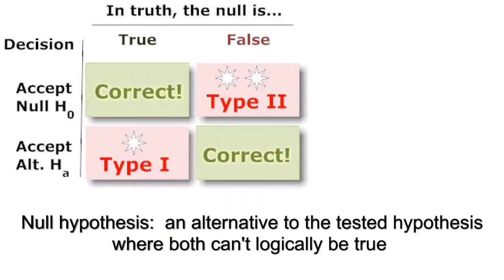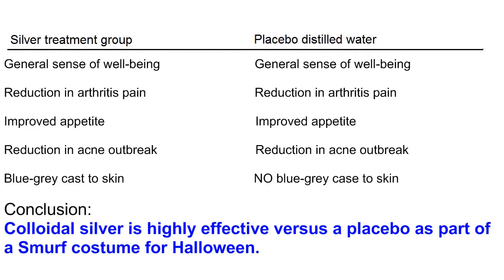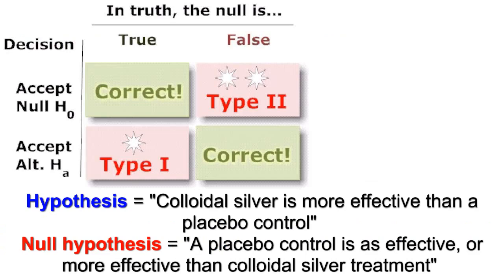What is needed, and what is used in real scientific studies, is a null hypothesis. The null hypothesis is an alternative to the tested hypothesis, where both can't logically be true. In our colloidal silver example, the null hypothesis might be that the health effects of the silver solution are no different than the distilled water control group, who were told they were getting silver. However, if we go looking for either hypothesis to be true and they both are, we can assume that our results are biased and inconclusive. If only the hypothesis, but not the null hypothesis, is clearly supported by the evidence, we have determined something useful about the therapy.